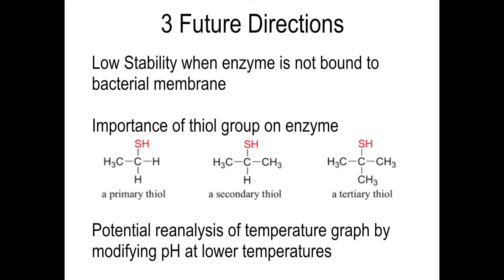The next gap is with the understanding of the thiol functional group. They know it is important, but they are not able to explain why the thiol group is of importance for this specific beta-galactosidase enzyme. The last gap is in regards to Figure 5 — the temperature graph was run at a specific set pH, and it is possible that modulating the pH could yield an enzyme with a higher relative activity at lower temperatures. Though this can't be proven, it might be interesting to investigate in order to improve the efficacy of this enzyme in removing lactose from milk products.